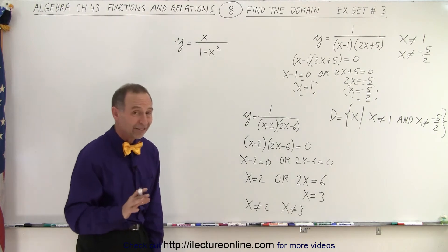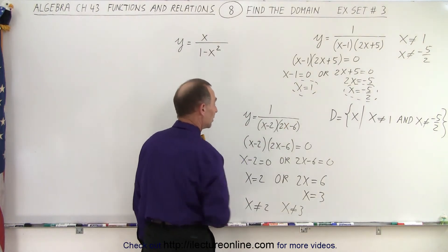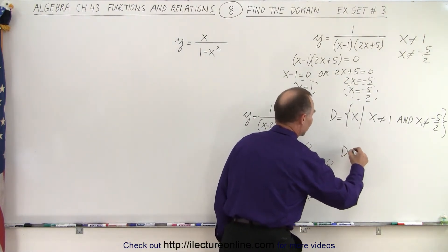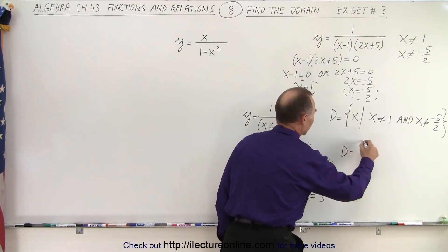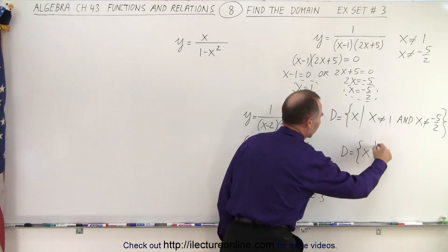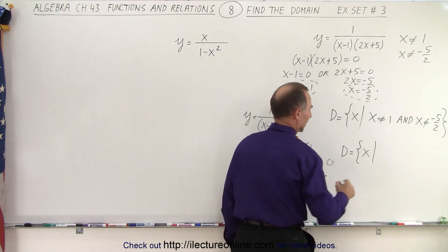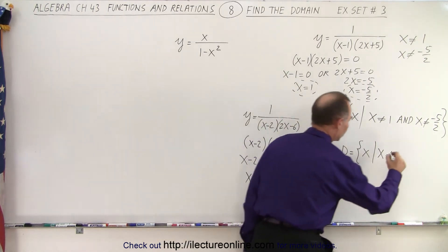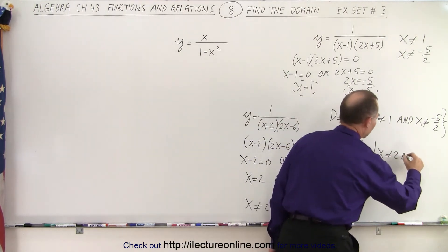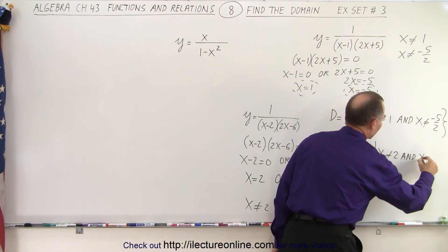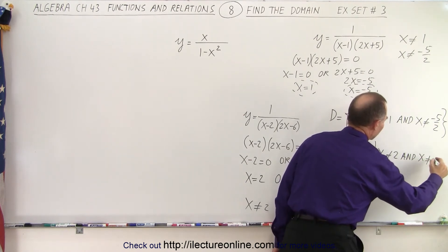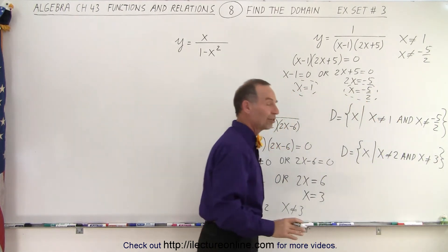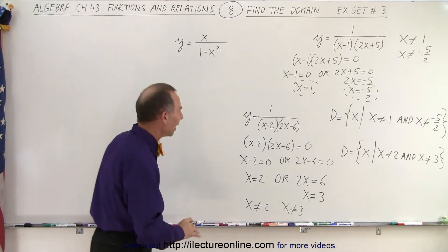Those are the two values that x cannot be, which will make the denominator equal to 0. Therefore, the domain is the set of all x's such that x cannot equal 2 and x cannot equal 3. Those are the only two restrictions — x can be any other value.